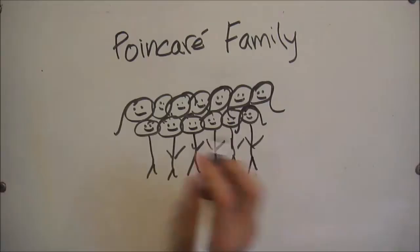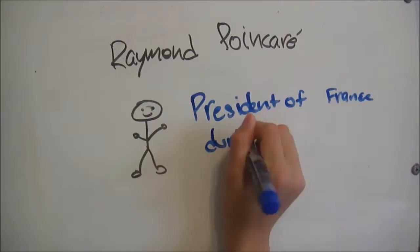The Poincaré family was a very influential family, producing many powerful figures. They had a lot of money and proved to be a family of great distinction. Henri Poincaré's cousin, Raymond Poincaré, was Prime Minister of France several times and President of the French Republic during World War I.